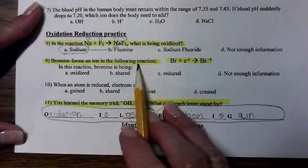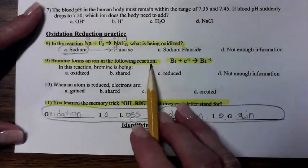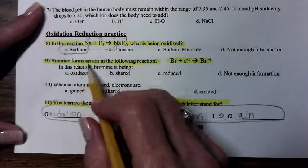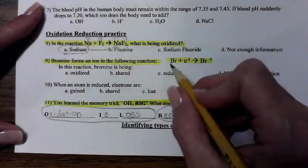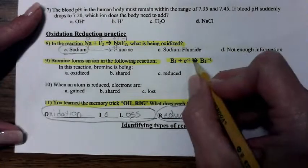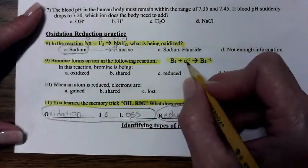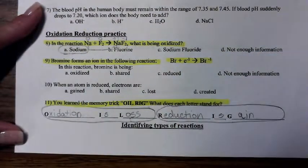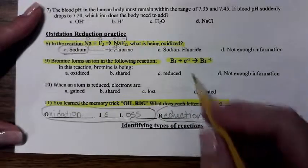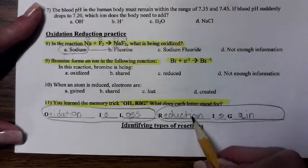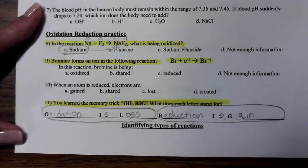Bromine forms an ion in the following reaction. I need to read. Bromine right here, what is it doing? Bromine plus an electron makes bromine with a negative 1 charge. Well, down here it says reduction is gain of electrons.